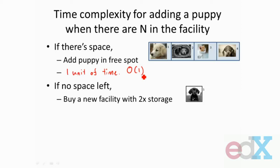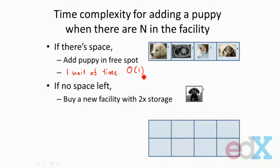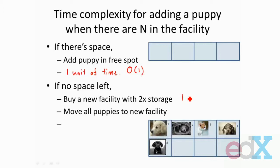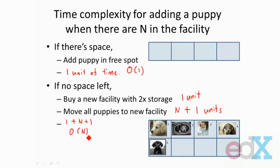When the facility is full and there's no space left and he gets a new puppy, what he has to do first is buy a new facility that's twice the storage of his old one, then move all the puppies into the new facility, and finally move the last puppy into a free spot. Buying a facility takes one unit of time, moving all the old puppies into the new facility takes n units of time because he had n puppies, and then it takes one additional unit of time for the one new puppy. So in total, this took one plus n plus one units of time — or in big O notation, that's big O of n. So in the worst case, when there's no space left, it's going to take big O of n time to add a new puppy.